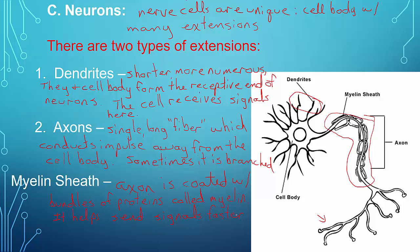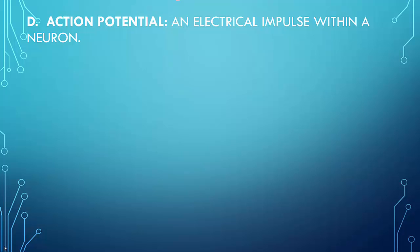Next, we have this thing called action potential. Action potential is an electrical pulse within a neuron. So, the potential is the word that we use when we're talking about electricity, so this is an action potential. This means that the neuron is being given an electrical signal to cause an action to occur.